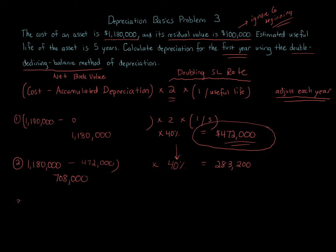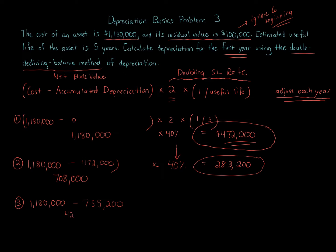Then we go to year three. In year three we again start with $1,180,000 and subtract away year one plus year two depreciation: $472,000 plus $283,200 equals $755,200 in accumulated depreciation. Subtracting from $1,180,000 gives a net book value of $424,800. Multiplying that by 40% gives us $169,920 for year three.